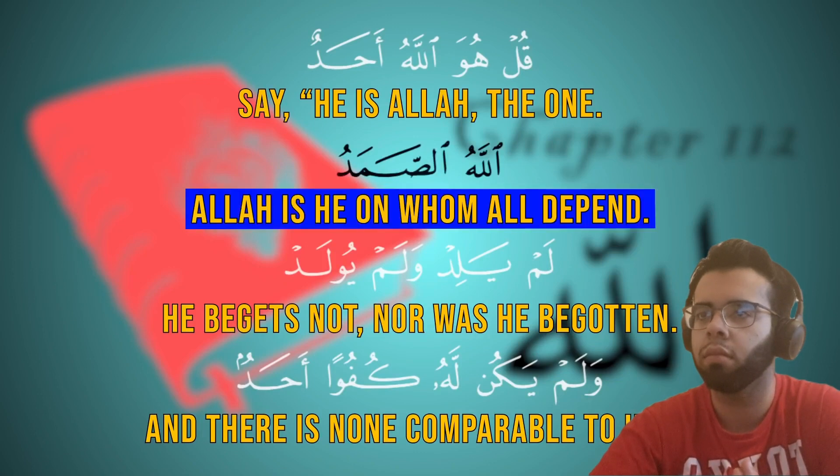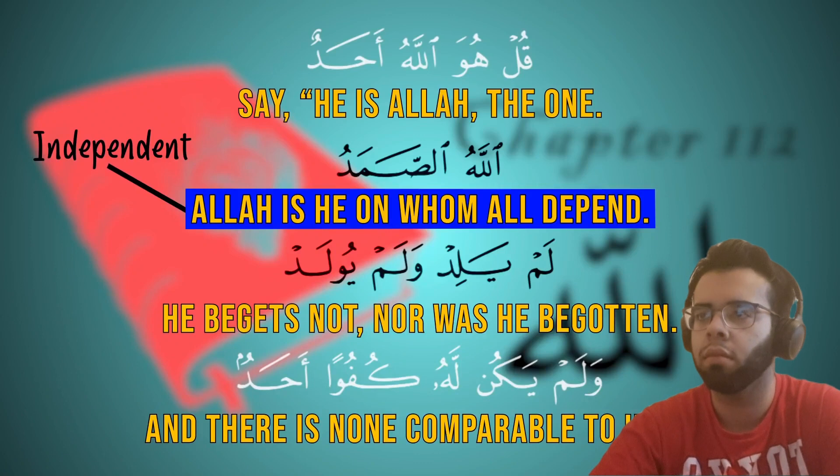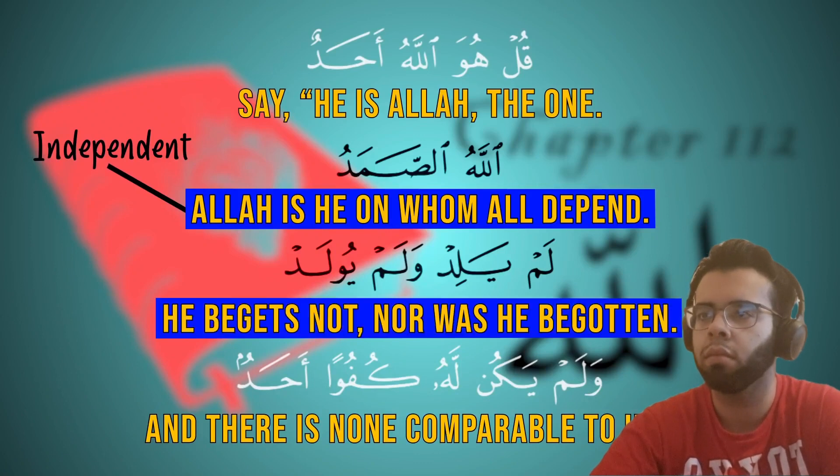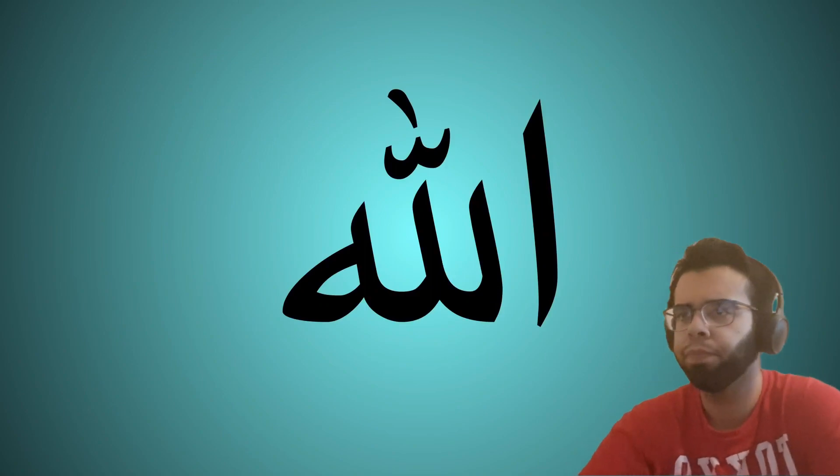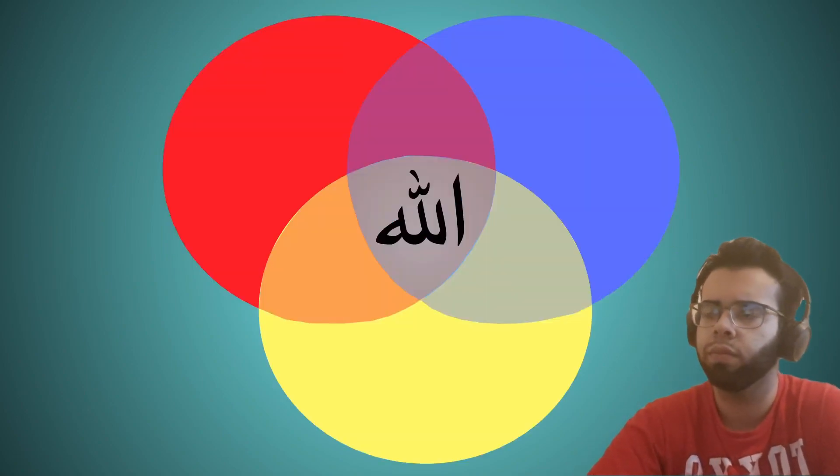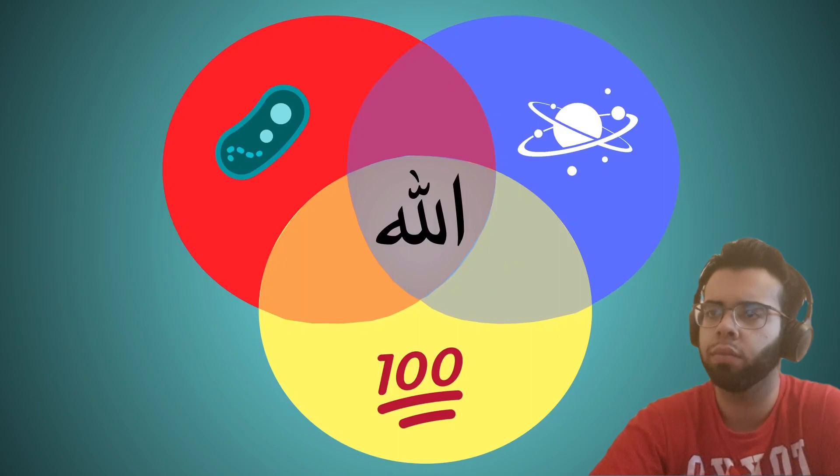Allahus samad, which means that Allah is he on whom all depend, highlights Allah's independence. And lam yalid wa lam yoolad, which means he begets not, nor was he begotten, implies eternality. We can see that in less than 10 words the Quran describes our creator in a way that provides an irrefutable argument for his existence. Allah is the independent, eternal reality that explains the origin of life, the universe and everything.